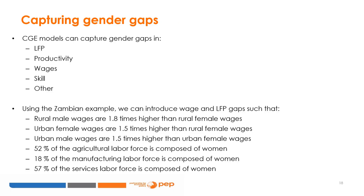Gender gaps can be of various types. CGE models can capture gender gaps in labor force participation, productivity, wages, or skills, among others. Introducing gender gaps in CGE models requires data that captures this gap. Using the Zambian example, we can introduce gender wage gaps and gaps in labor force participation using the data on wages and employment from Tables 1, 2, and 3. We find that rural male wages are 1.8 times higher than rural female wages, urban female wages are 1.5 times higher than rural female wages, and urban male wages are 1.5 times higher than urban female wages.